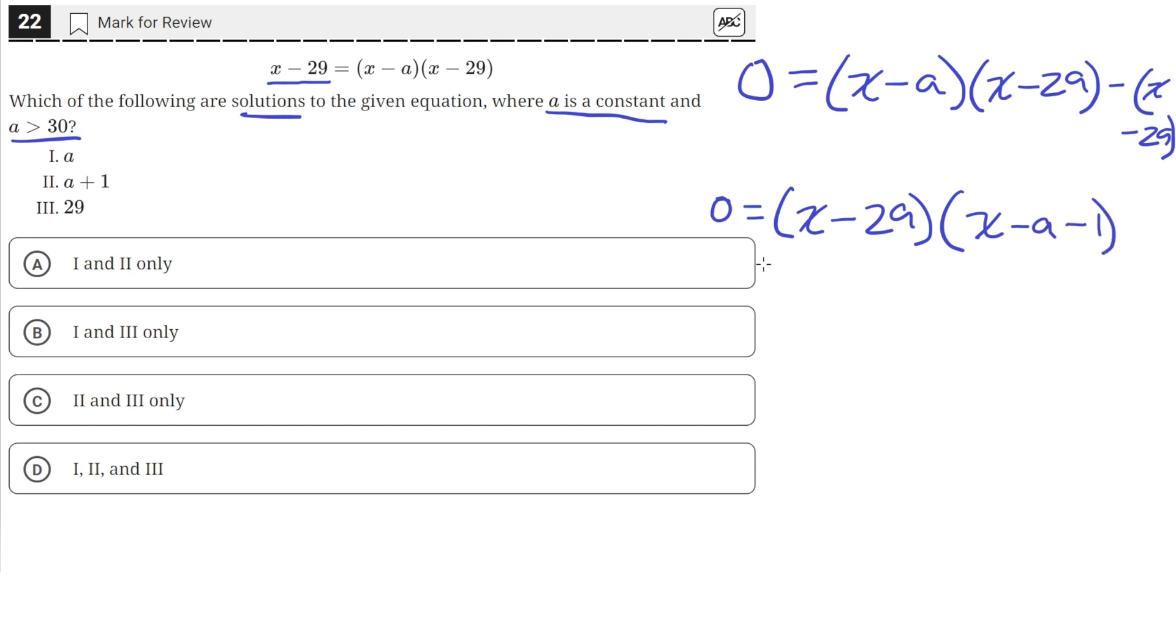So now we have this expression here and we can see that one of the solutions is x equals 29. Because when x is equal to 29, 29 minus 29 is 0. So 0 times this quantity here will just be 0 as well, which satisfies the equation. Left and right hand sides will both be equal.